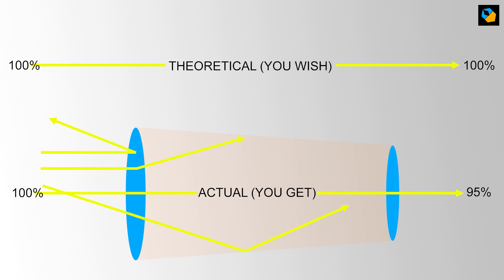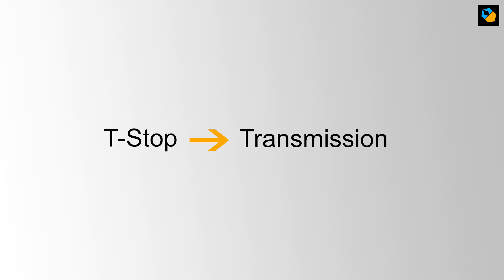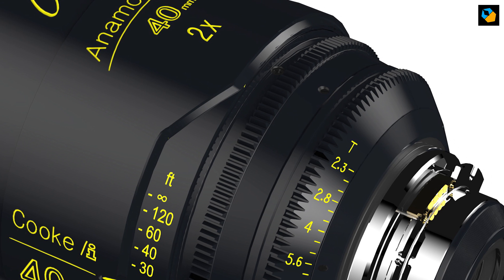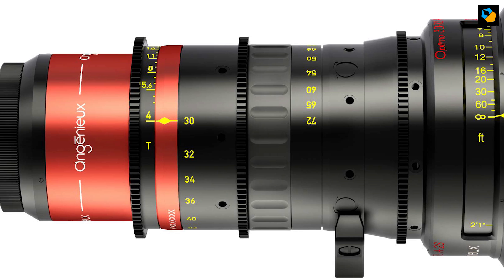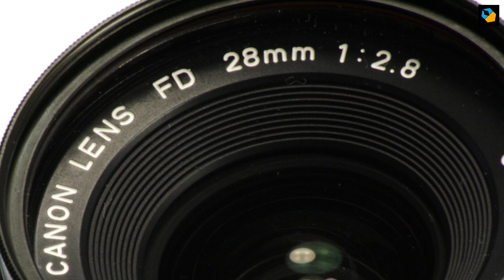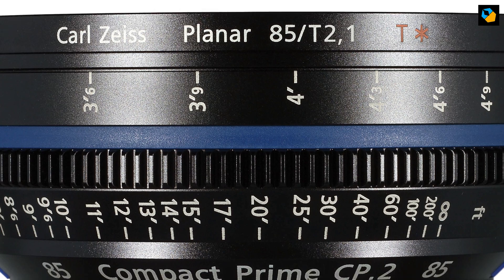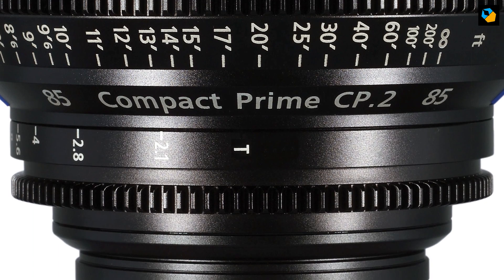This means the actual light transmission is always lower than the F-stop. This new result — more accurate — is the T-stop, where T stands for transmission. Whatever the lens is calibrated to is clearly mentioned on it. If it uses F-stops, you'll see F. If it is T-stops, you'll see a T.